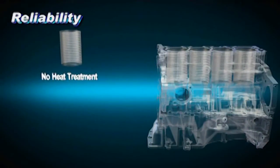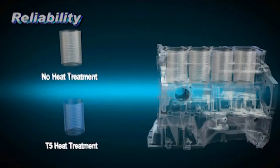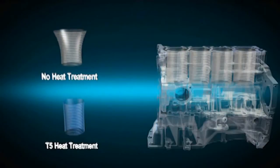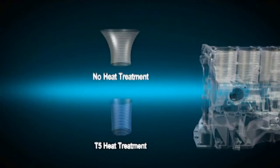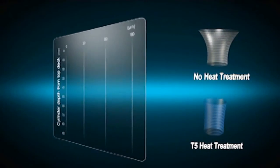During high pressure die casting, a special T5 heat treatment eliminates residual stresses in the cylinder block. This prevents cylinder distortion and results in a remarkable improvement in engine performance.